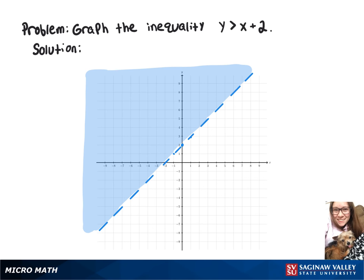And if we choose a point in our shaded region, like (2, 5), and substitute it into our inequality, then we'll get 5 is greater than 2 plus 2, and 5 is greater than 4, which is true.